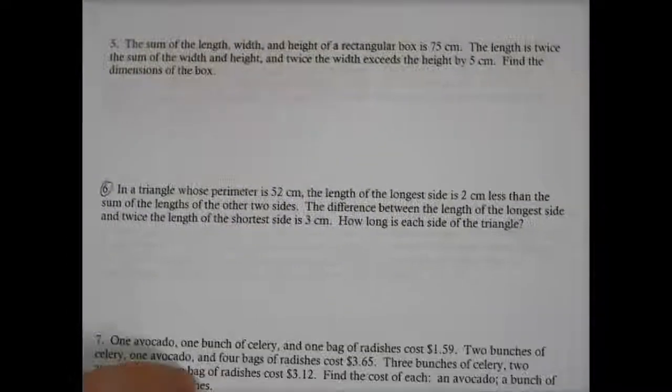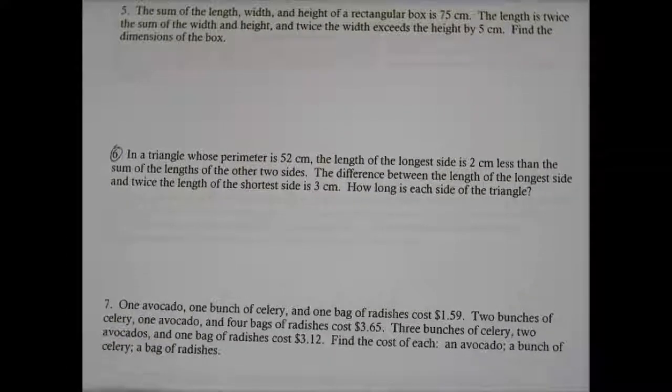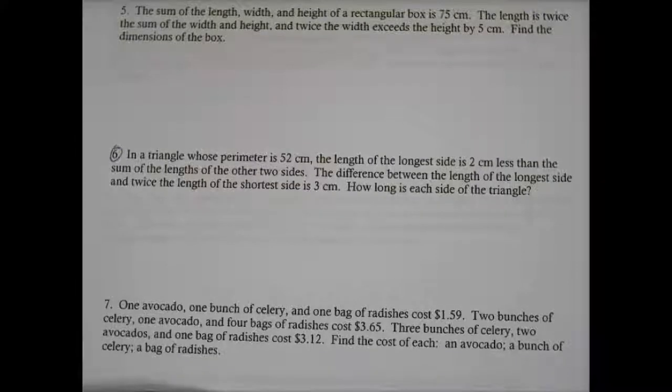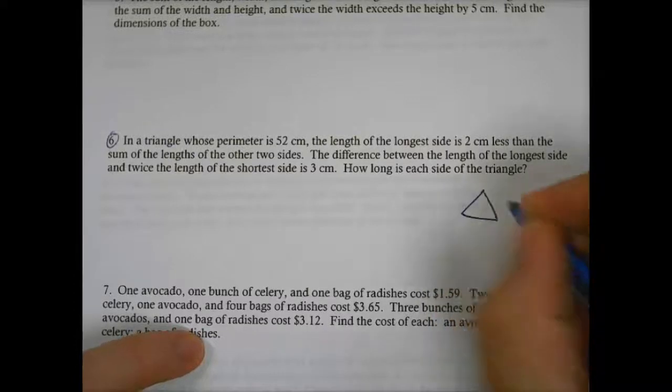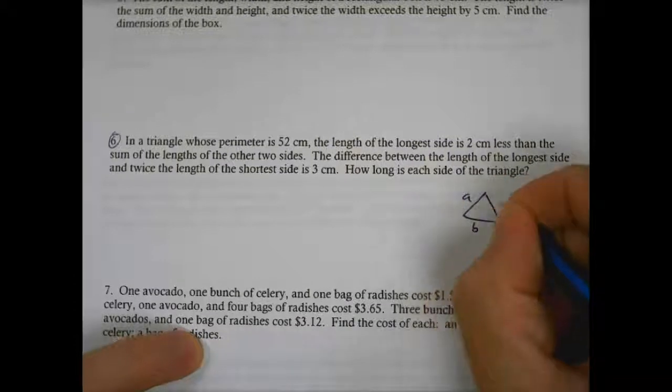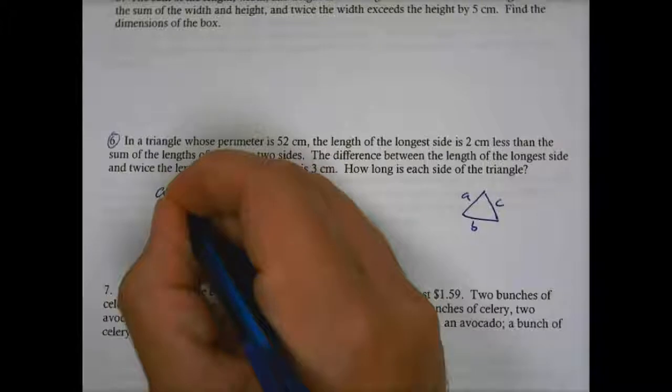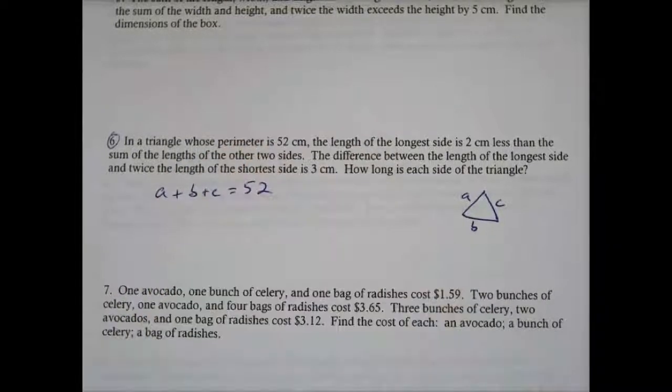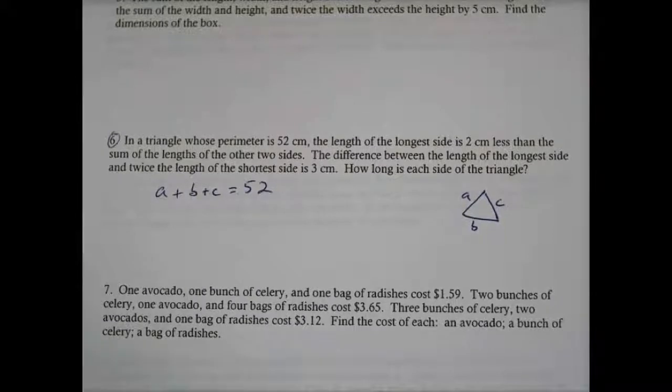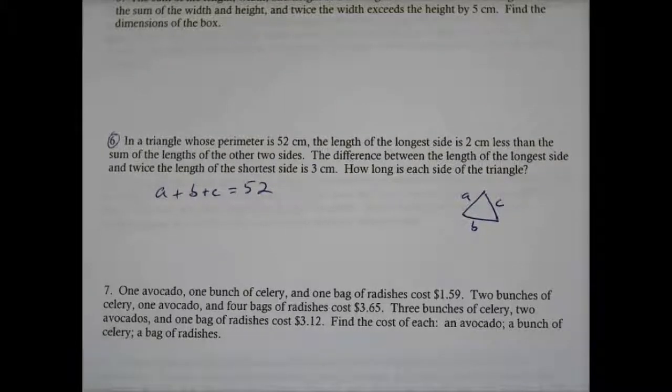Alright, in a triangle whose perimeter is 52, the length of the longest side. Perimeter is 52. So say if we have a triangle, we have A plus B plus C. So A plus B plus C is equal to 52. You can call these X, Y, Z. I really don't care what you call your variables. Just make sure you're consistent throughout the problem.